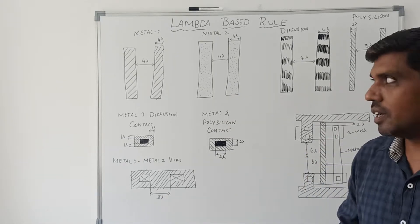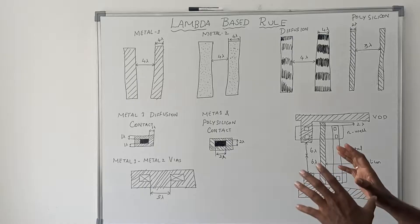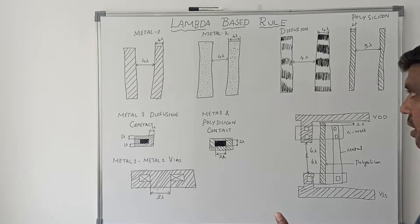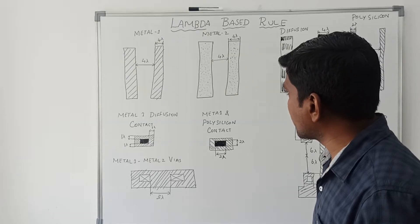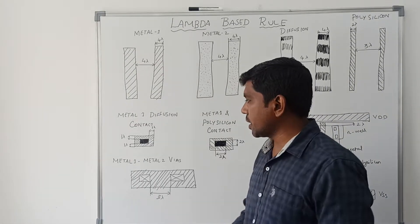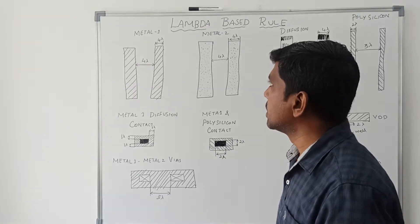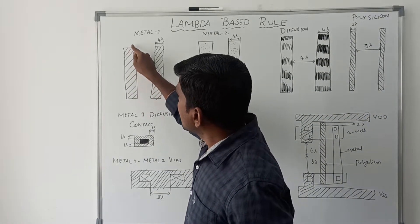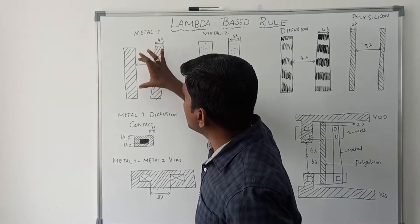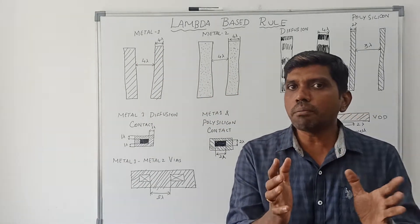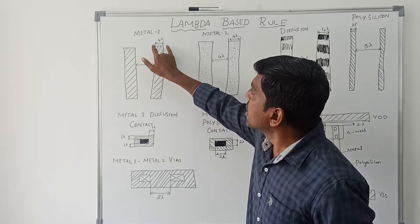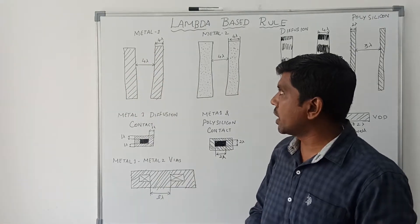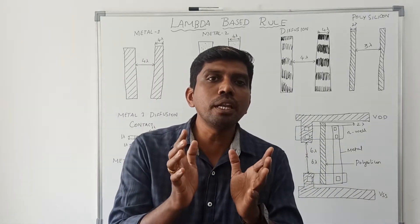Lambda-based design rules are very important when designing layouts. On this board I draw different structures showing how metal 1 and metal 2 are represented, along with diffusion, polysilicon under metal 1, diffusion contact, and metal 1 with polysilicon contact. Metal 1 is represented by a rectangular box with a forward slash symbol. The minimum width of metal 1 is 4 lambda.